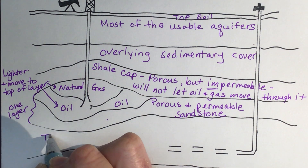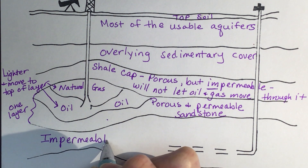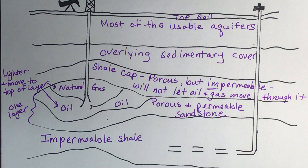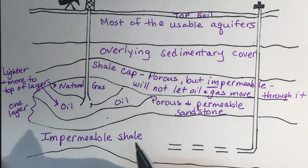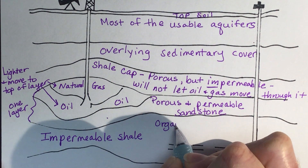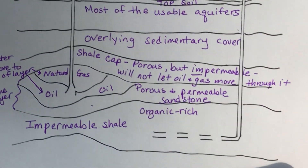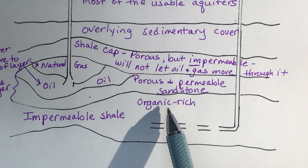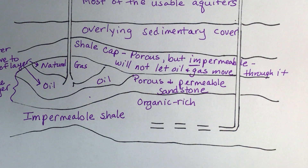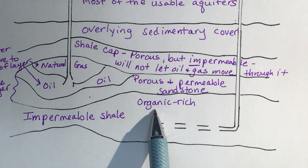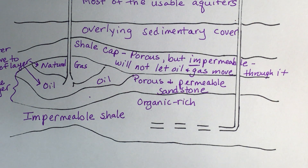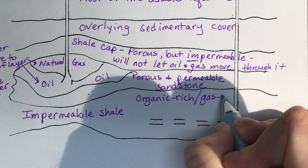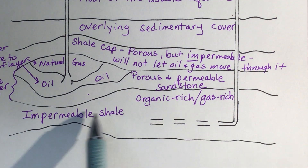Down below we have impermeable shale. Shale is a sedimentary rock and does break apart easily. This layer is organic rich — 'organic' here means from a living thing. Fossil fuels are ancient living things buried under heat and pressure over time. So this layer is organic rich and also gas rich. When we do fracking for natural gas, we want this shale layer.